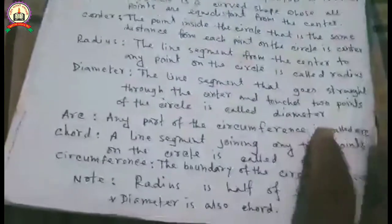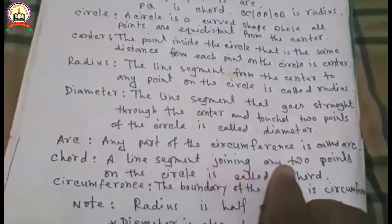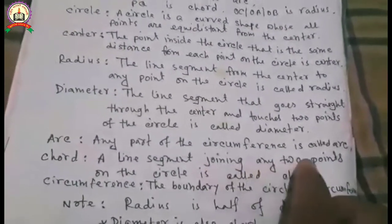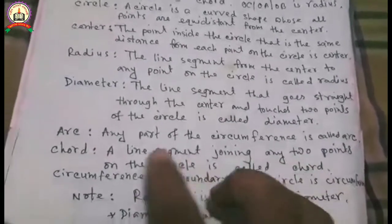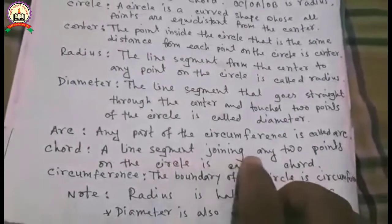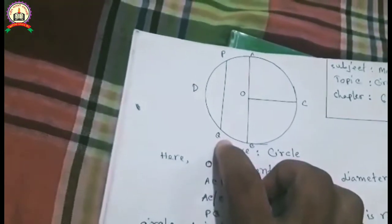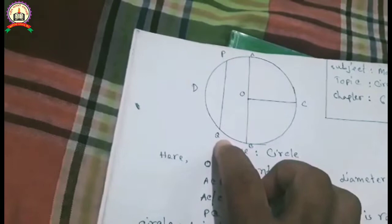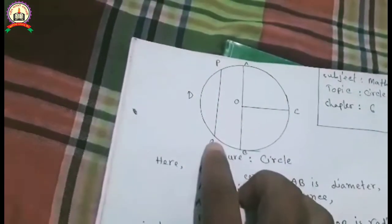Then, chord. A line segment joining any two points on the circle is called a chord. Here, PQ is a chord because it joins two points of the circle, so it is chord.